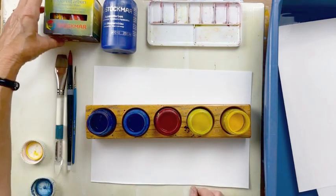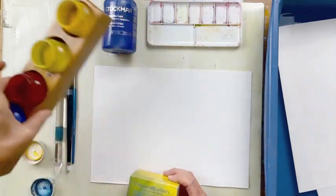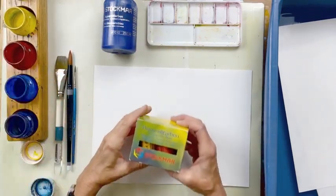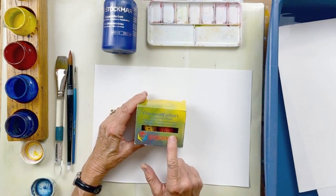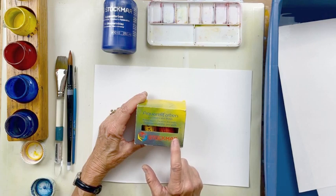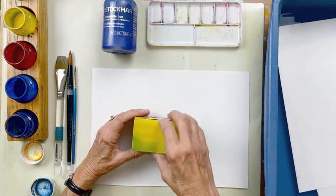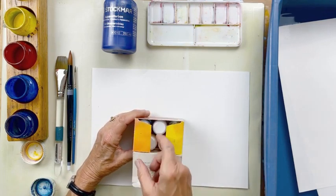There is a set that you can get made by Stockmar, and this has all six of the colors in it. You can mix these colors four parts water to one part color. They do extend out pretty well and will last you for quite a while.